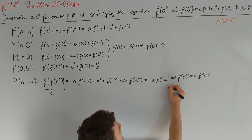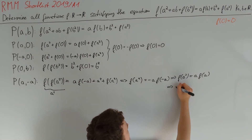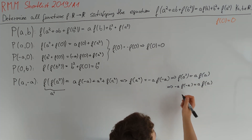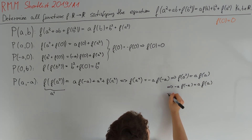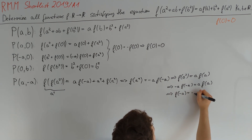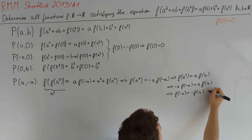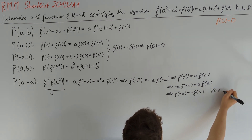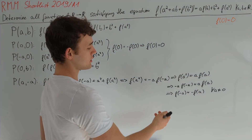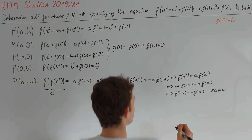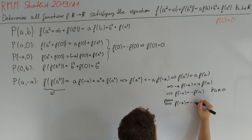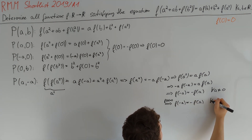Setting the right sides equal gives −a·f(−a) = a·f(a). For a ≠ 0, dividing by −a tells us f(−a) = −f(a) for all a ≠ 0. We've already established that f(0) = 0, so this equation also holds at a = 0. Therefore f(−a) = −f(a) for all a, meaning f is an odd function.